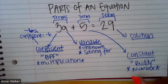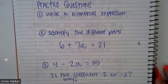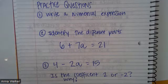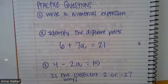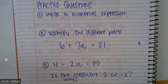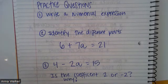If you're good, I'm going to show you the practice questions for this lesson — you only have three. First, write a numerical expression of your own. Second, identify the different parts of the equation six plus seven A equals 21: identify the solution, the constant, the coefficient, and the variable. Third, for four minus negative two A equals 15, decide if the coefficient is two or negative two, and explain why. If you have any questions, please write them down so we can talk about them in class. Check your answers in the table of contents, and as always, I hope y'all have a really great day!